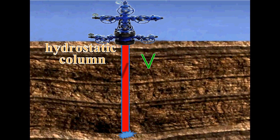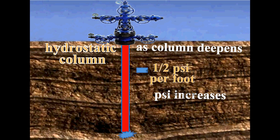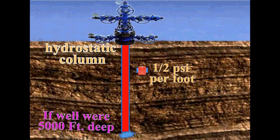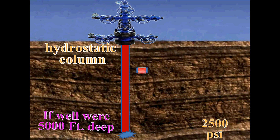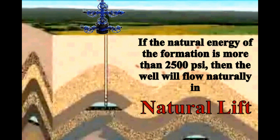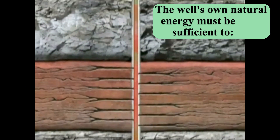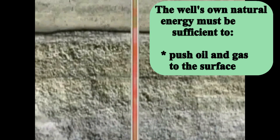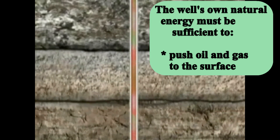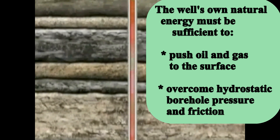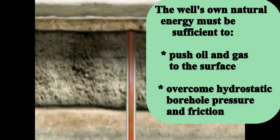In this illustration, you see a hydrostatic head of a fluid column that stretches from the surface to the reservoir. As the column deepens, PSI increases about 1.5 psi per foot of reservoir depth. So if this well were 5,000 feet deep, the PSI at the bottom would be about 2,500 psi. If the natural energy of the formation is more than 2,500 psi, the well will flow naturally. The well's natural energy must be sufficient to overcome the hydrostatic borehole pressure and the friction created by the hydrocarbons moving up the tubing to the surface.